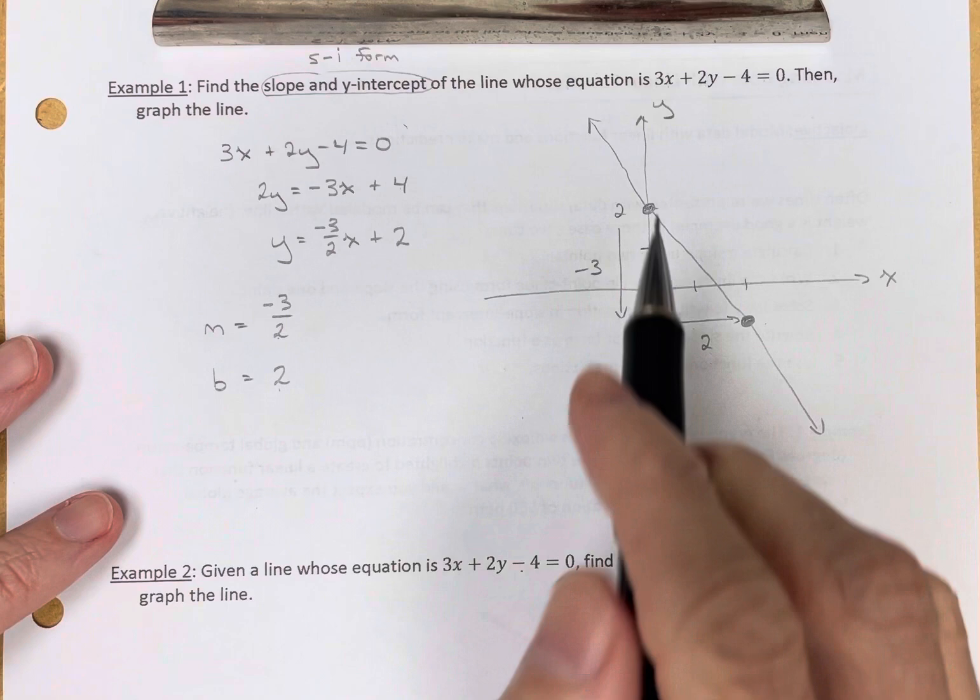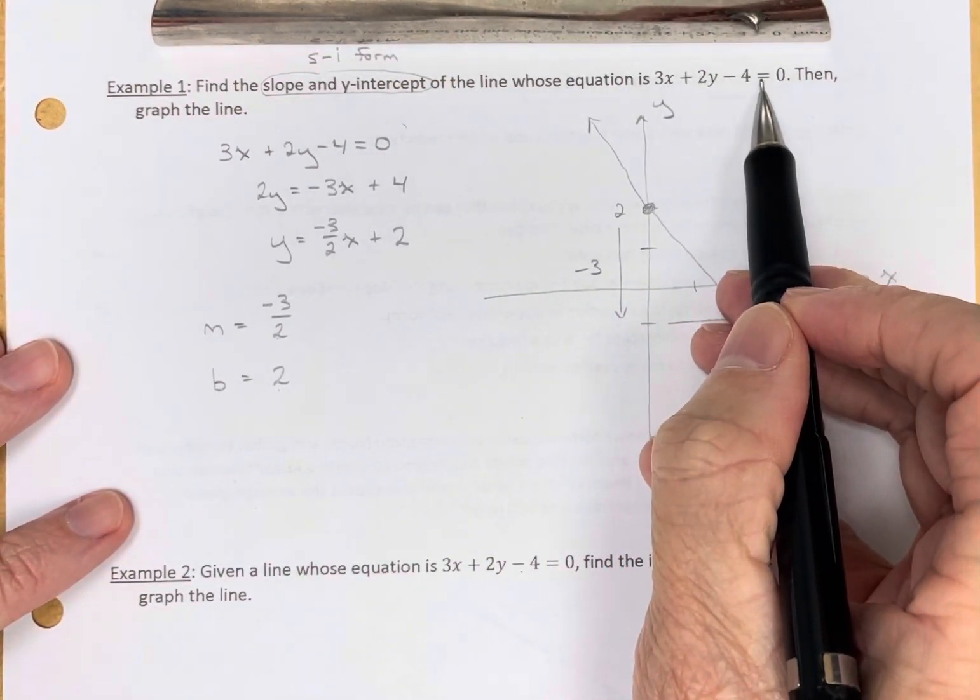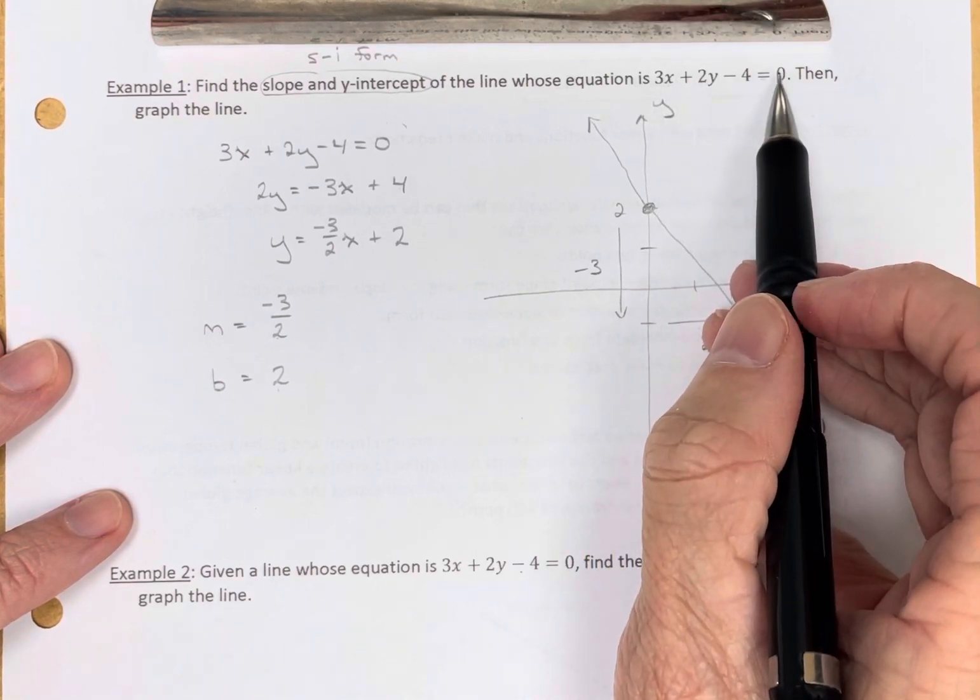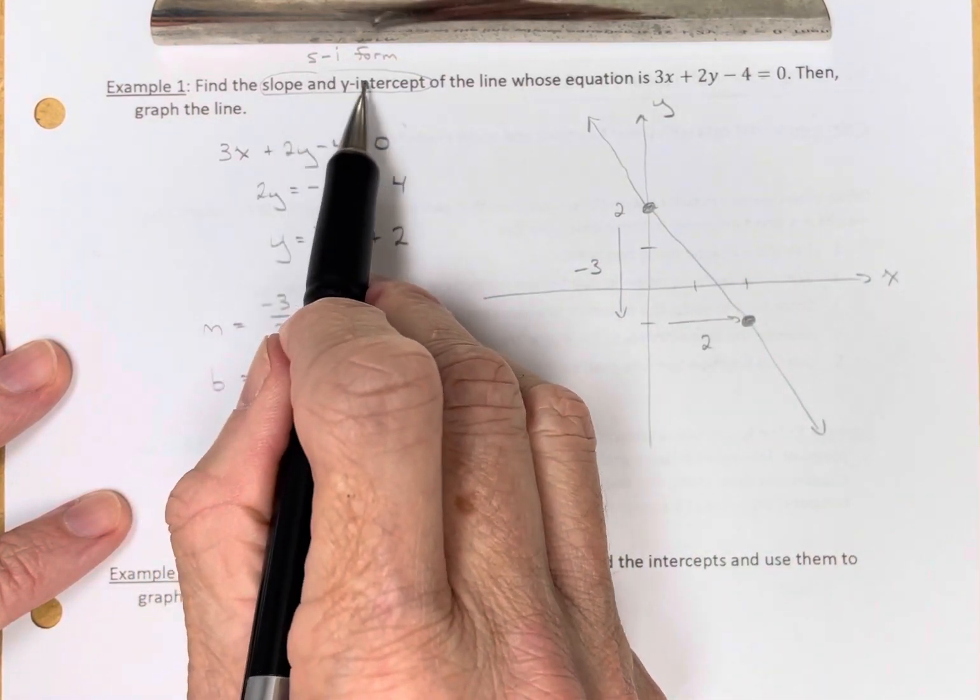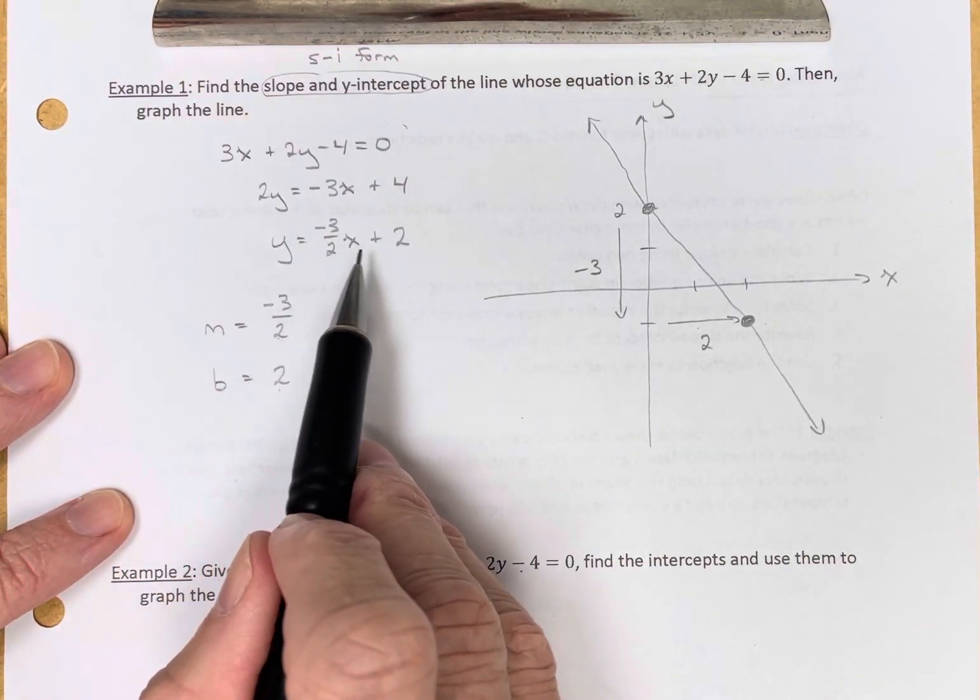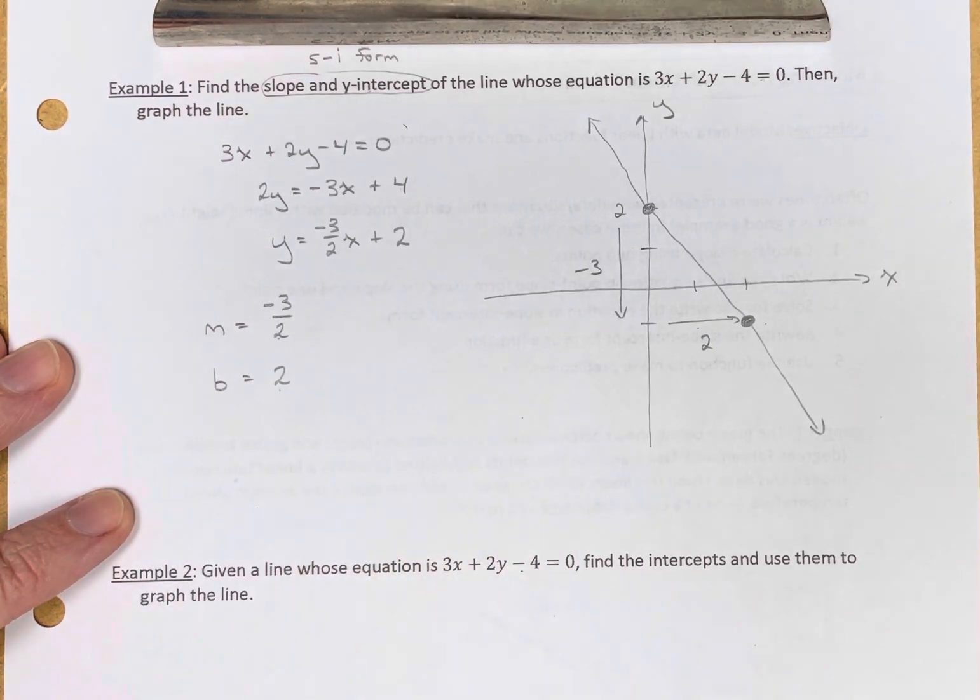Now notice, while I gave you the general form of the equation of the line, we did not graph it using intercepts. In this case, we wanted to find the slope and the y-intercept, so we solved for y to get the slope and the y-intercept, and then we graphed using slope and intercept.